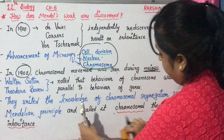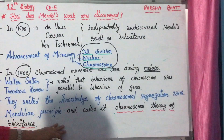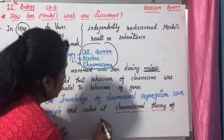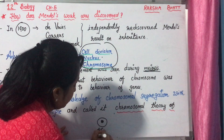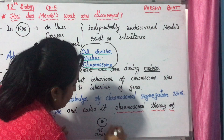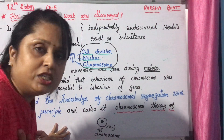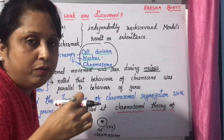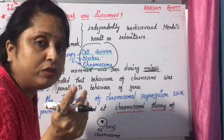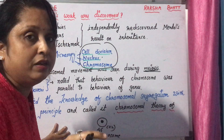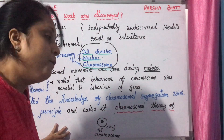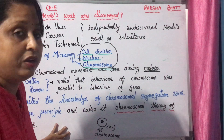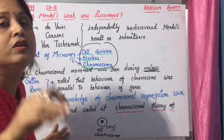During meiosis, in our body, meiosis occurs during gamete formation. Our body cells have 46 chromosomes — we are diploid organisms. Every cell in our body has 46 chromosomes. But in male sperm there are only 23 chromosomes, and in female ovum there are only 23 chromosomes.